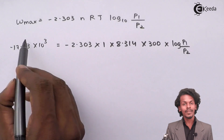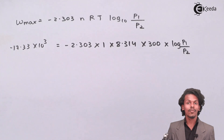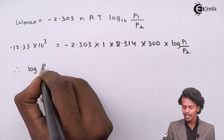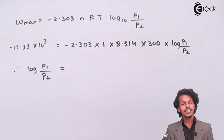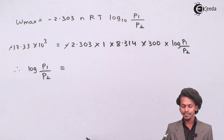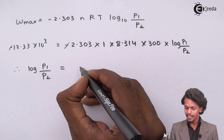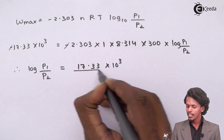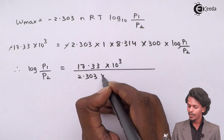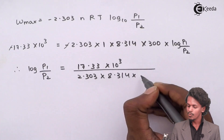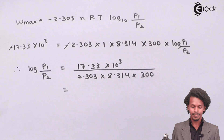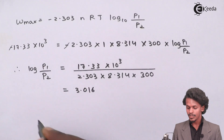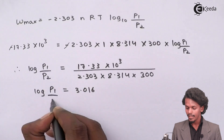Now we evaluate to find log(P1/P2). Cancelling the minus signs on both sides, log(P1/P2) equals 17.33×10³ divided by 2.303 × 8.314 × 300. This gives us the answer 3.016. So the value of log(P1/P2) is 3.016.